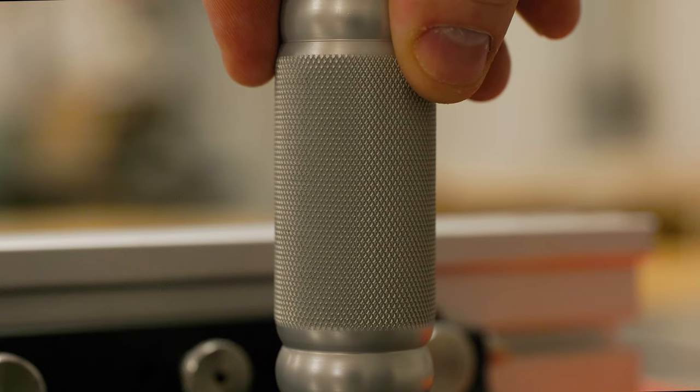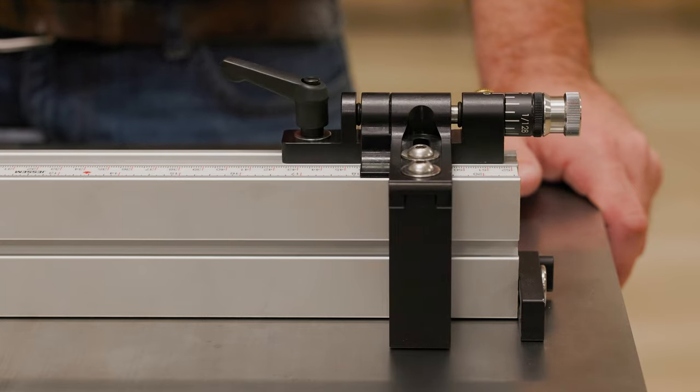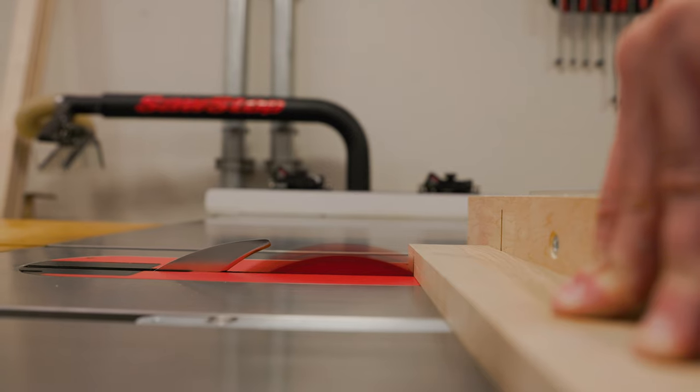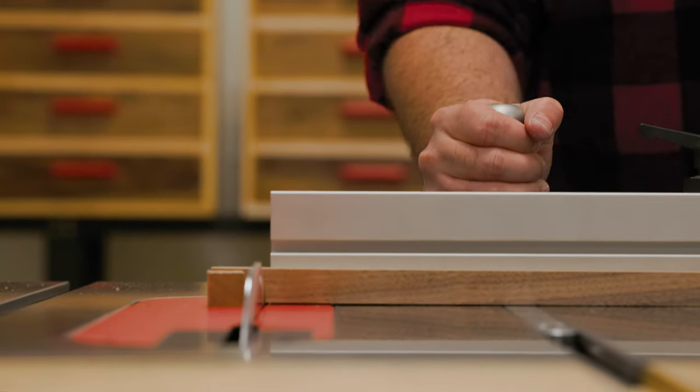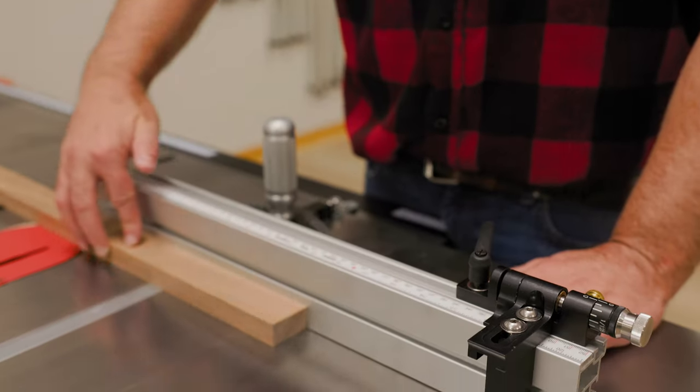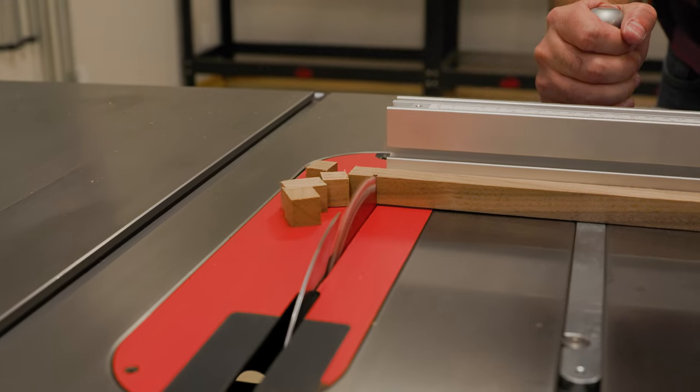It's time to combine precision and versatility with the Jessam MiterXL2 and our brand new micro-adjuster. The MiterXL2 is the perfect addition to your table saw, giving you maximum control over your work and ensuring incredibly accurate cuts every time.